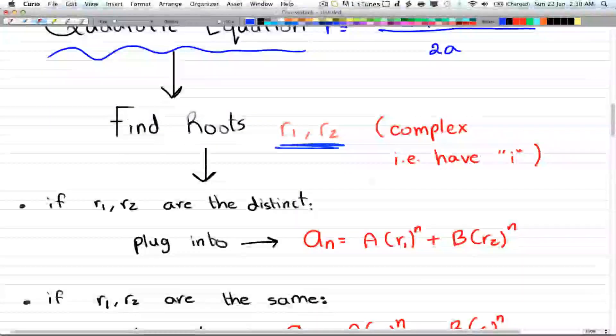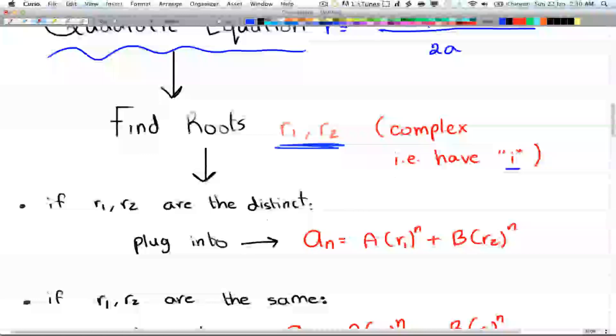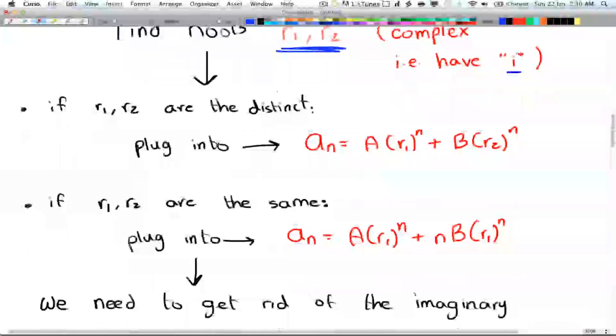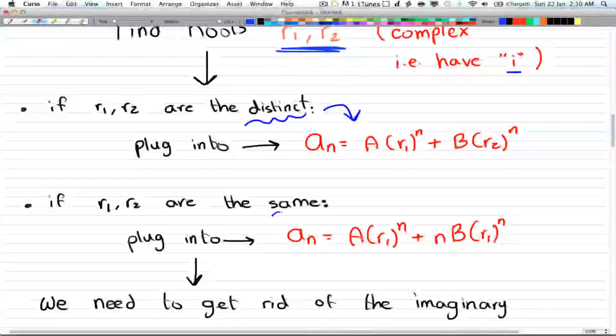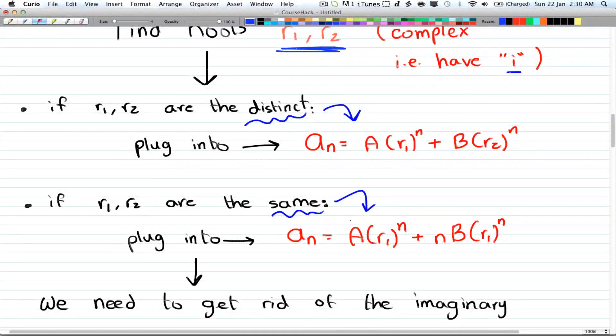So you find the roots. And if they're complex, you're going to have an i in the answer. Now, if they're distinct, you're going to use this formula here. If they're the same or repeated, you're going to use this formula here.